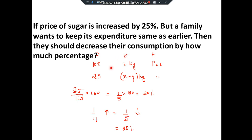Shortcut: 25% = 1/4 in fraction, increase, so up arrow. Keep numerator 1 the same. Add denominator and numerator: 4+1=5. This is a reduction in consumption: 1/5 = 20%. So we have to reduce our consumption by 20%. If the question asked how many kg to reduce, we would go further, but since it asks for percentage, the answer is 20%.